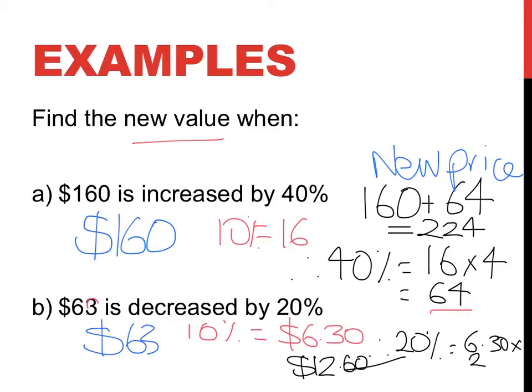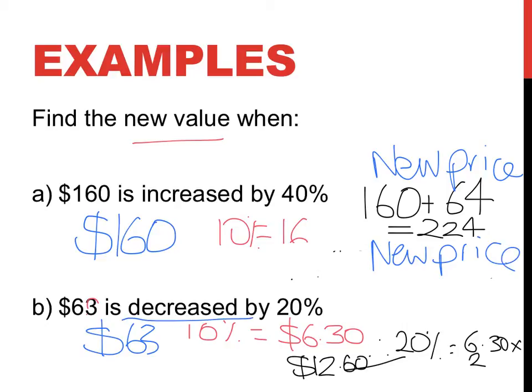I didn't write the three there. My new value, I'm just going to rub out some room on here so I have a little bit of room. I didn't really think this one through very well. My new price, because it is decreased, is going to be $63 minus $12.60. $63 minus $12.60 becomes $50.40.